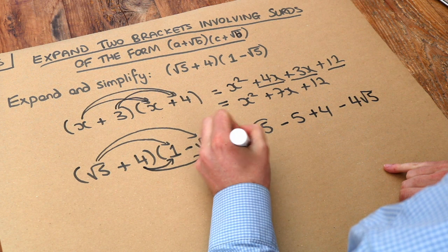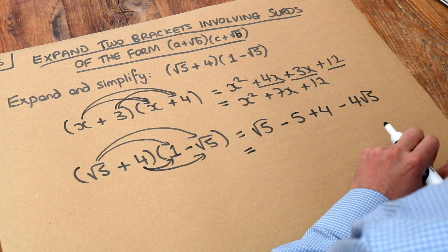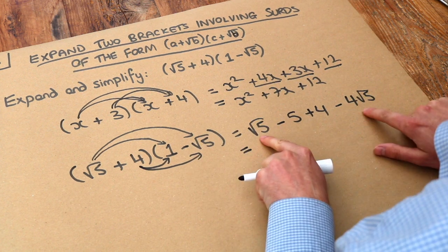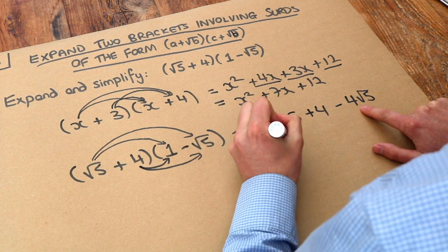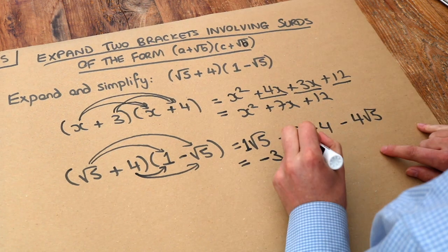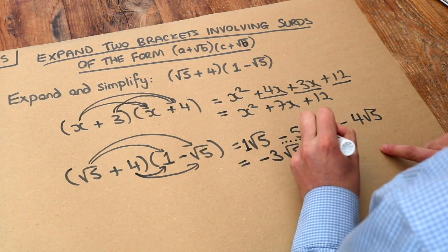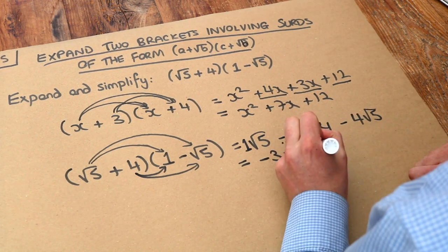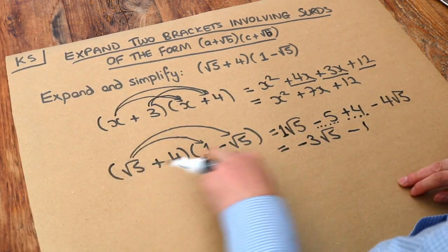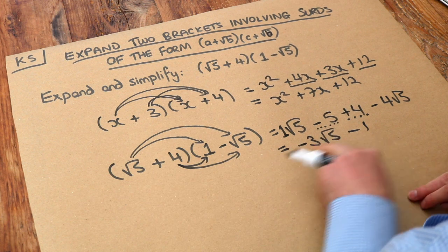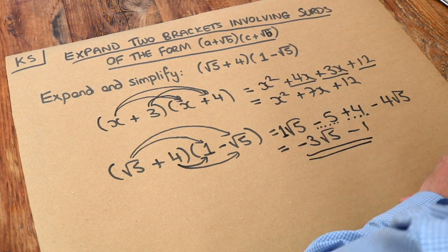And then we can sort of collect like terms, just like with algebra. So let's collect the surds together first. We've got 1 lot of root 5 minus 4 lots of root 5 is minus 3 lots of root 5. And then we've got these constant terms. So we've got minus 5 plus 4 is minus 1. And that is the final answer. If you were to type this into your calculator, it would actually simplify it for you, and you should get that expression there.